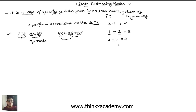Instead of giving direct data, we can store 1 in variable A and 2 in variable B and write A plus B, which also gives 3. So there are many ways to specify data — it can be immediate data written directly in the instruction, stored in registers, or stored inside a memory location where we provide the memory location in the operands.